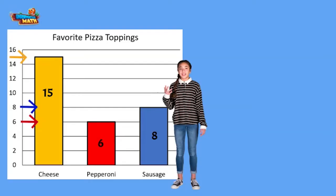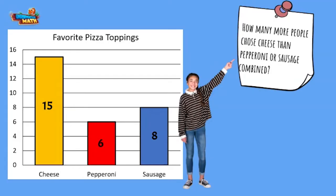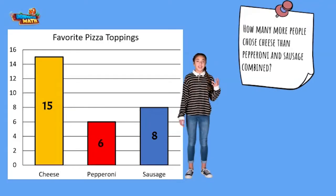Here's the question: how many more people chose cheese over pepperoni or sausage combined? I write the three numbers in my workspace and then pick apart the question. "How many more" tells me to subtract something, and "combined" tells me to add — the sausage and pepperoni choices need to be combined or added.